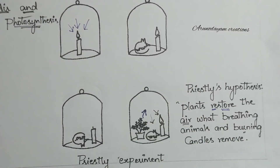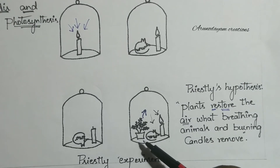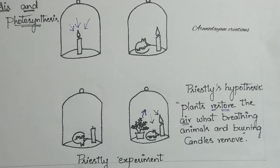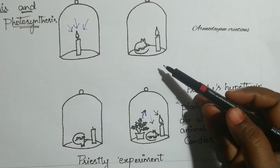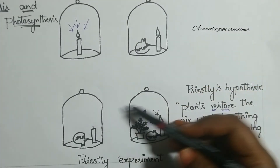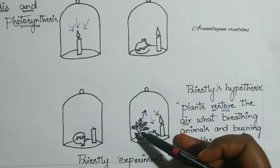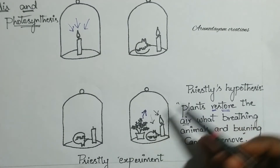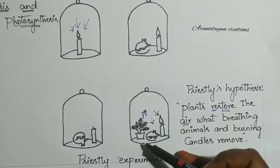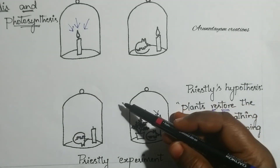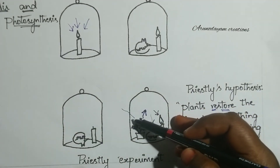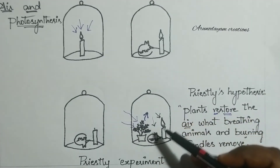Joseph Priestley observed that air plays a major role in the growth of plants. The logical question is: why did Priestley use a glass jar for his experiment? He used a glass jar because he wants to observe what is happening inside it, and also so that sunlight can penetrate through the glass jar and the mint plant can perform photosynthesis.